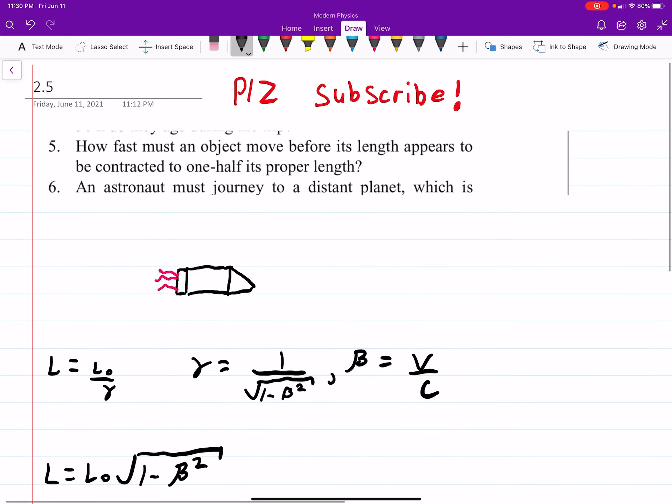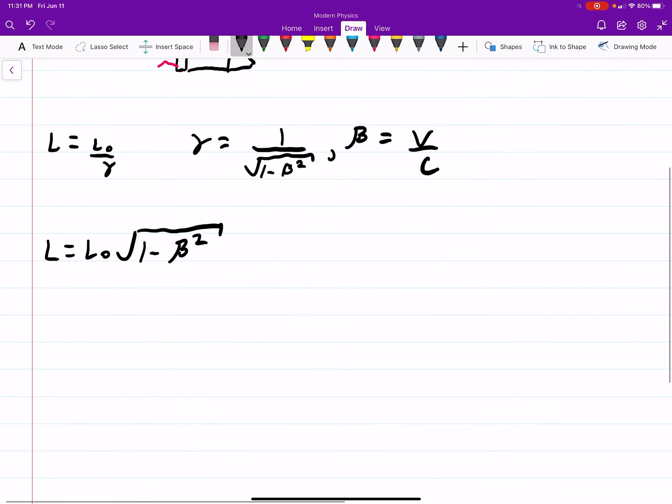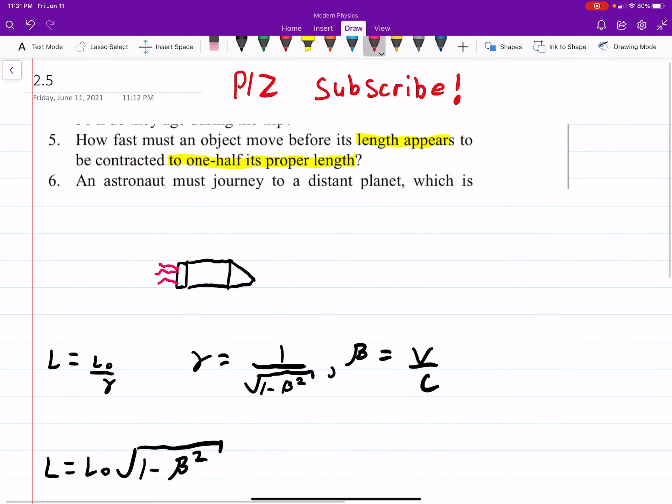But in the question, it mentions that the length appears to be one-half its proper length. In other words, L equals L-naught over 2, one-half the proper length. L-naught is your proper length.